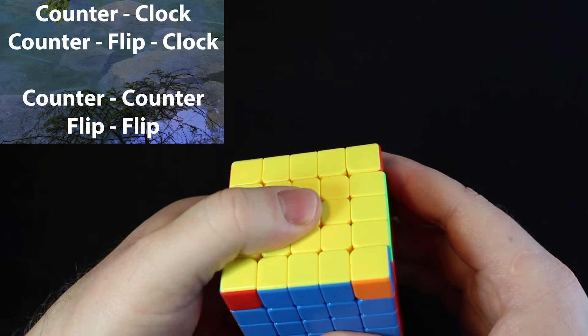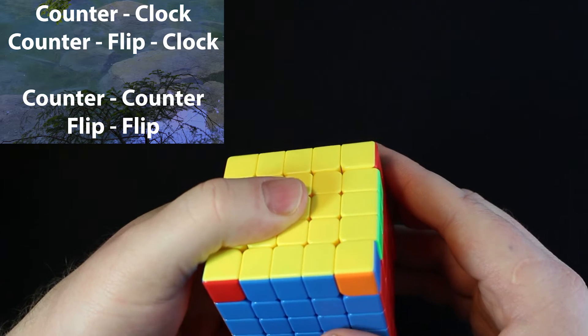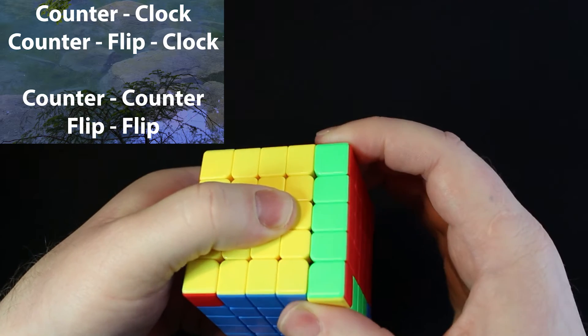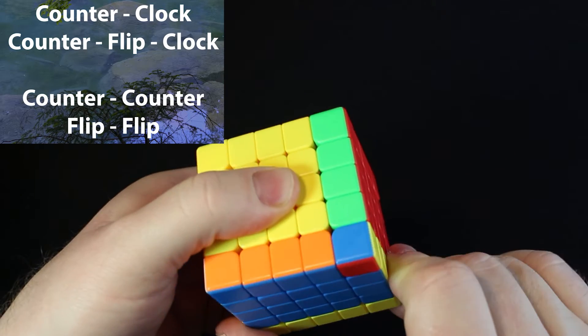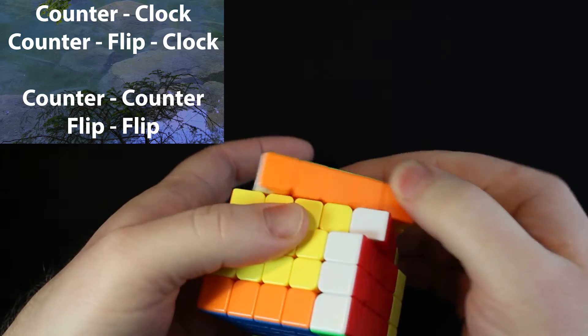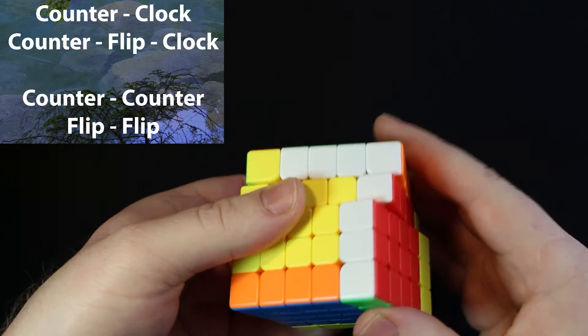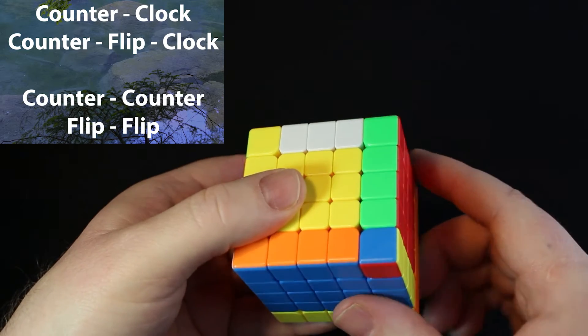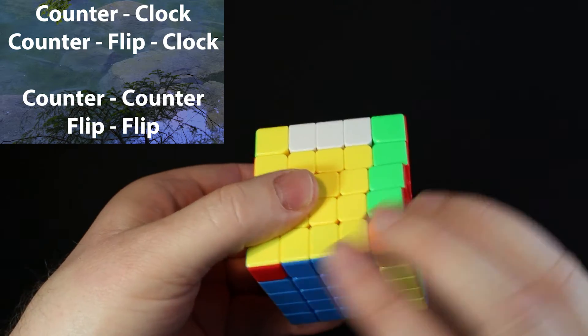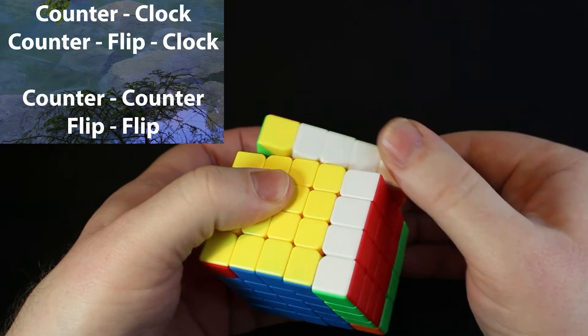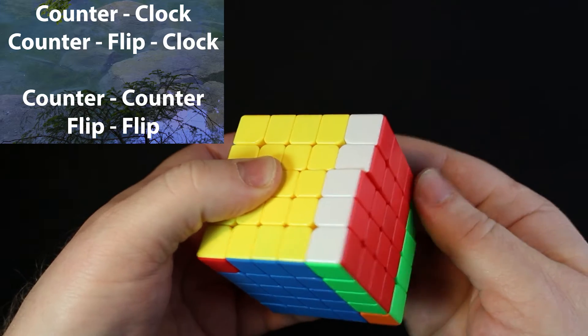Put our thumb on the yellow side and we're going to do those moves. Alright, counter, clock, counter, counter, flip, clock, counter, counter, flip, flip.